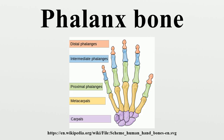Bony anatomy: each phalanx consists of a central part called the body, and two extremities. The body is flat on either side, concave on the palmar surface, and convex on the dorsal surface. Its sides are marked with rough areas giving attachment to fibrous sheaths of flexor tendons.